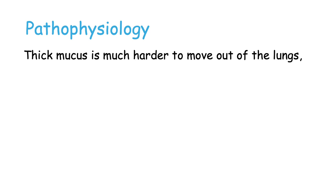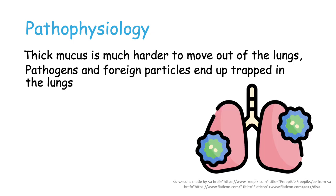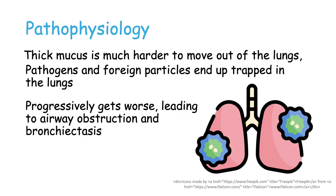This thick and sticky mucus is much harder to remove from the lungs, so pathogens and foreign particles end up trapped. This leads to inflammation and recurrent infection, which is a big problem in patients with cystic fibrosis. It progressively gets worse, leading to airway obstruction and bronchiectasis — the abnormal and permanent dilation of the airways.